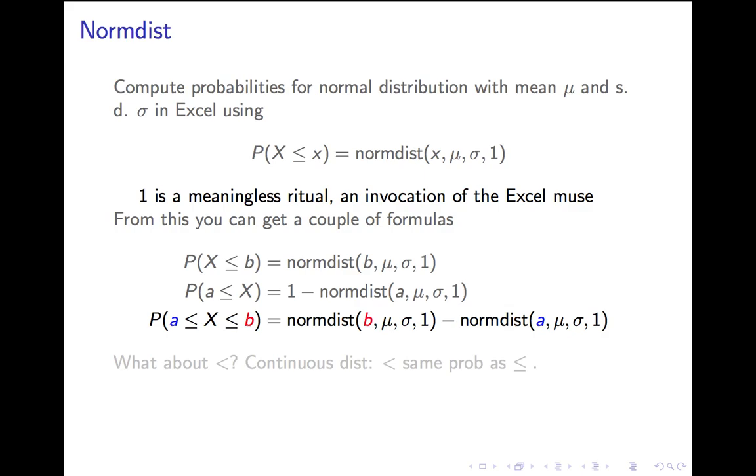More often, you'll want the probability of being between two values, A and B. Then you take normdist of the bigger minus normdist of the smaller. I'm only mentioning the first entry because the other three stay the same. They're always the same. μ, σ, and 1. So, normdist of big minus normdist of the little. That's the one we'll most often use. We'll occasionally use the one-sided ones.